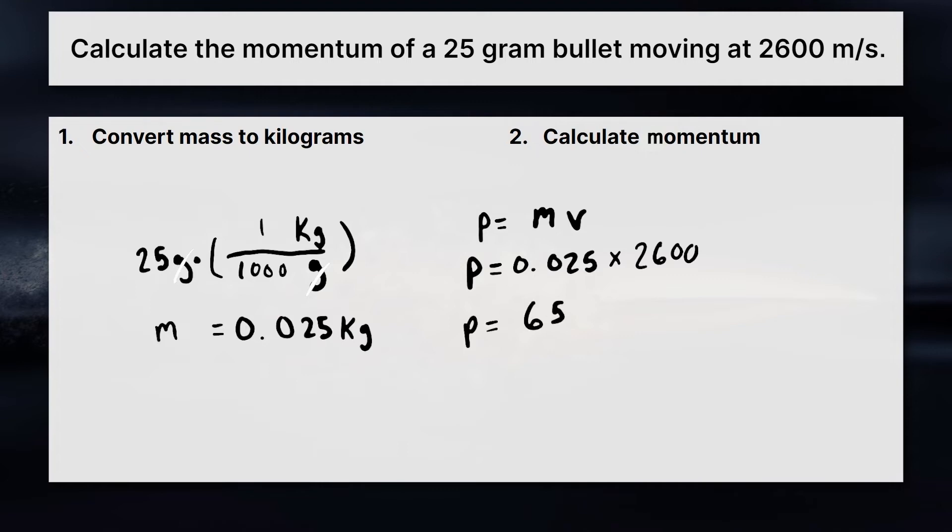And actually, here is one unique place where the rounding is already done. Our calculator spits out 65. We just need two sig figs here, because this has two sig figs and this has two sig figs. And we have two sig figs. So we're good.